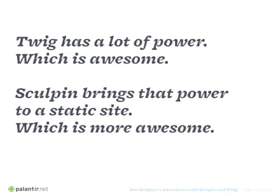So I've gone through all these different things Twig can do, which is pretty awesome. It has a lot of power, and I've only talked about the basic things. I didn't touch on any tests, any operators, most of the functions it offers, and I talked about maybe 10% of the available tags. There's a lot more power there — check the documentation. Sculpin brings that power to a static site, which is super awesome because you don't have to worry about going in and changing everything. You have all the power that Twig brings to a static site generator, which is great.